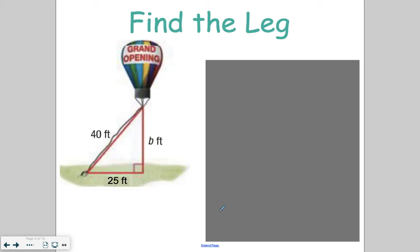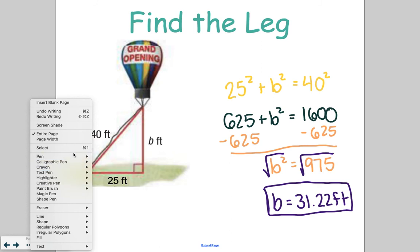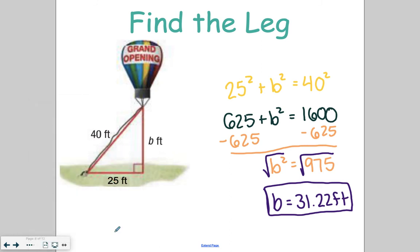Go ahead and find this missing leg on your own. Setting it up, 25 squared plus B squared equals 40 squared. Squaring our numbers, then subtract, taking the square root and rounding, you get 31.22 feet as the height off the ground for that balloon.